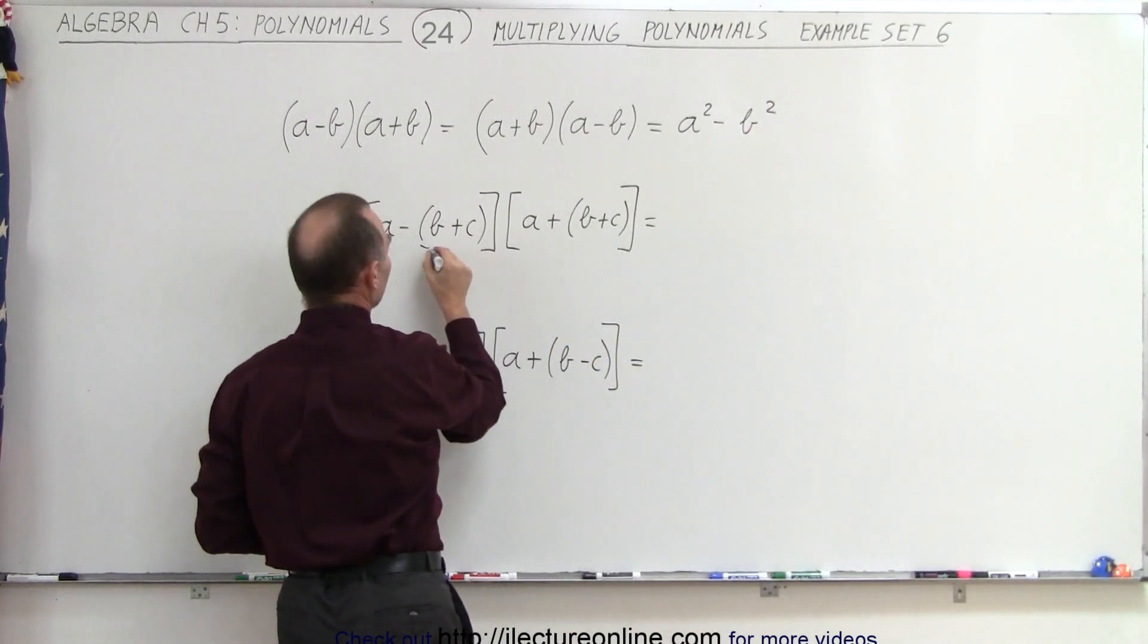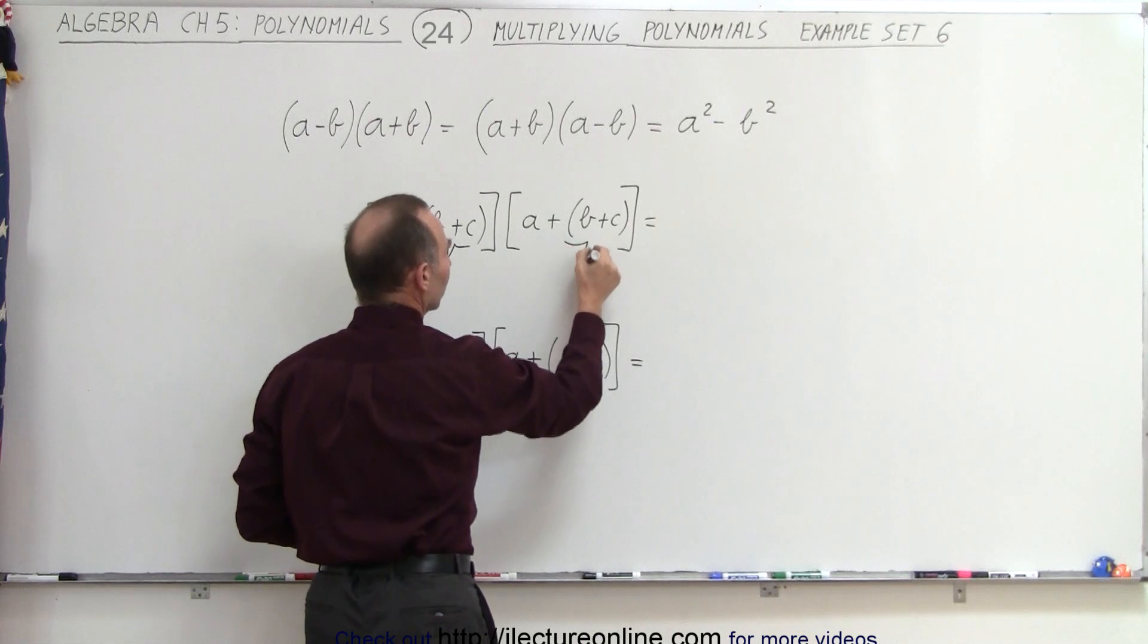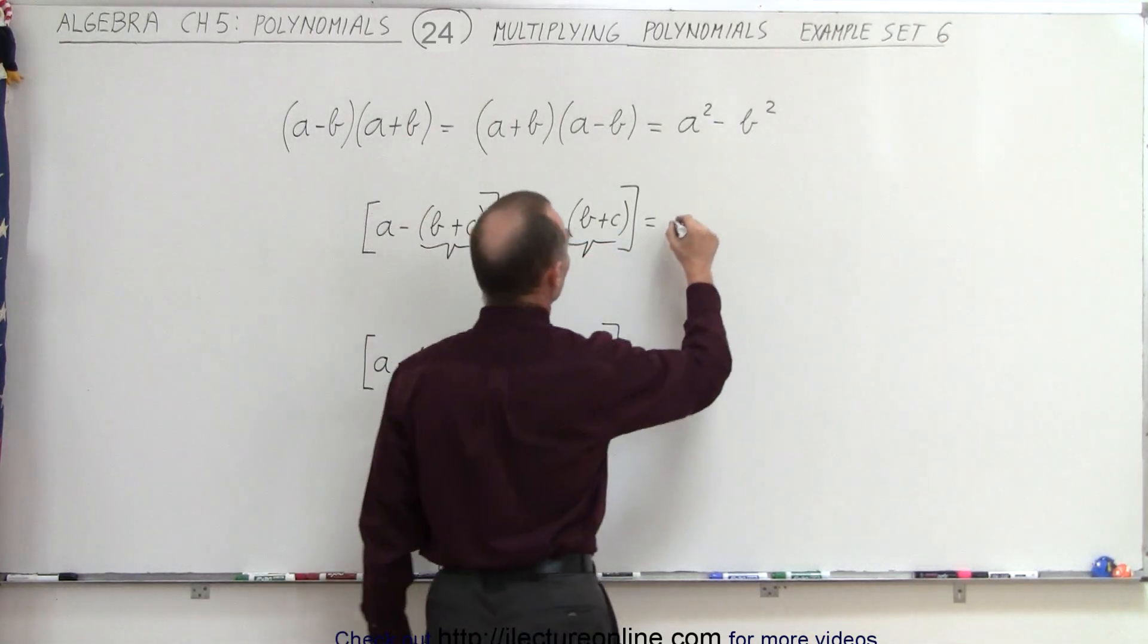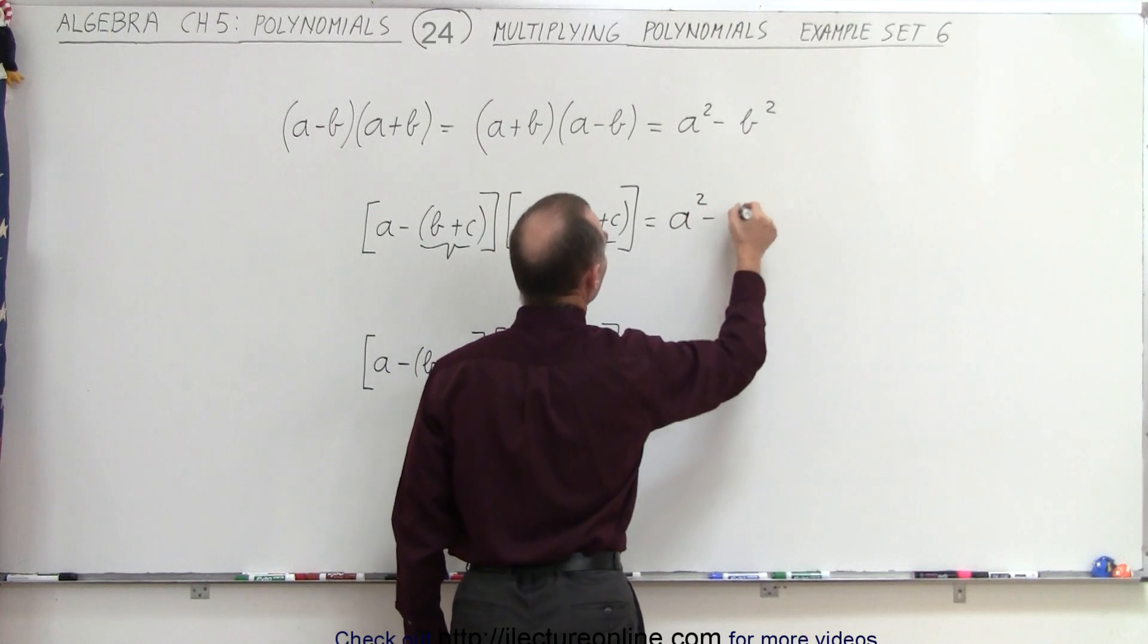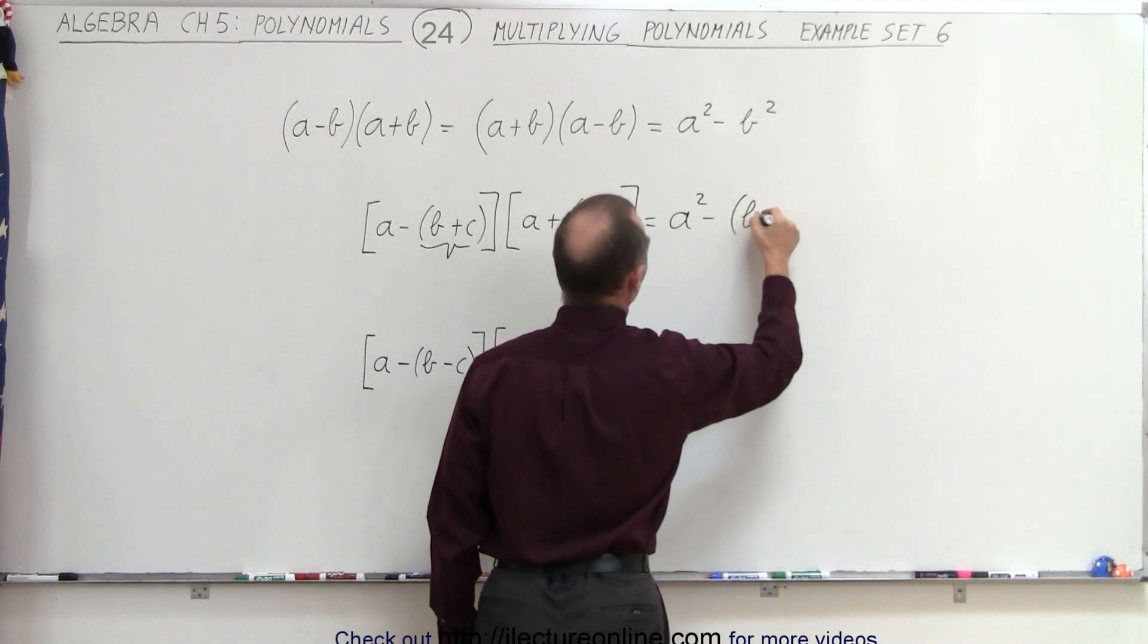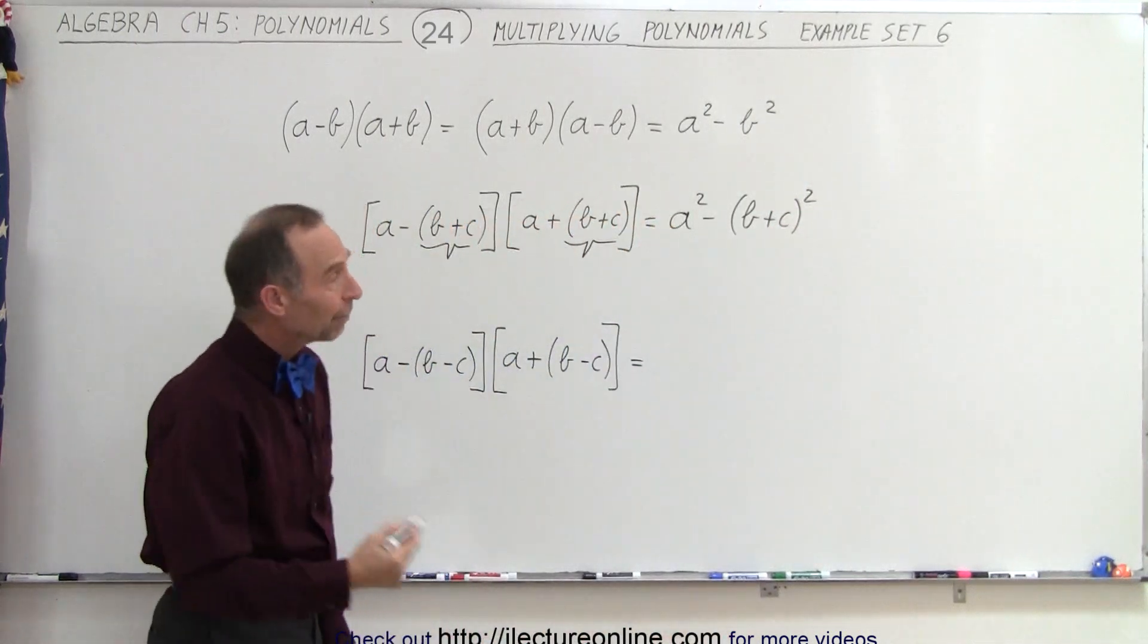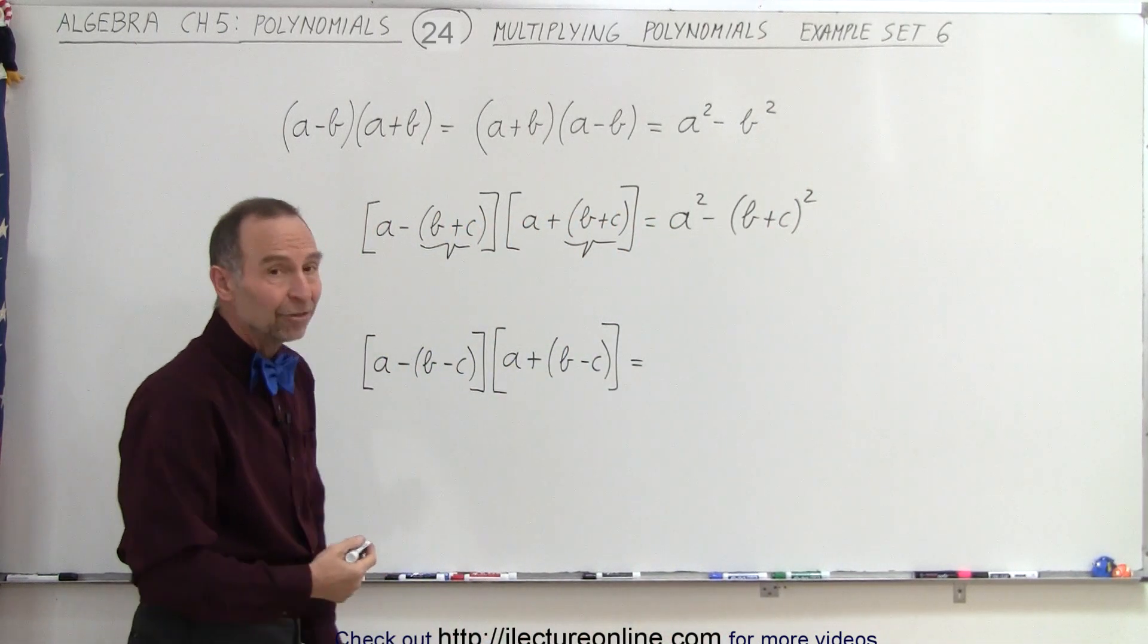So here we're going to do the same thing, thinking of this as being just a single term. If we apply the same rule, this would be equal to the first term squared minus the second term squared. Now the only thing left to do is to take that binomial, b plus c, and square it.